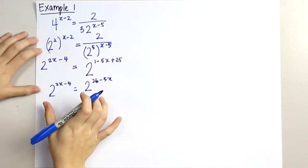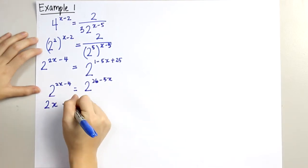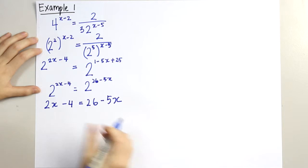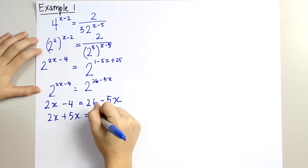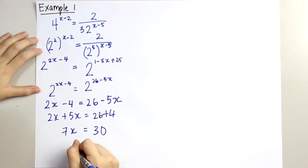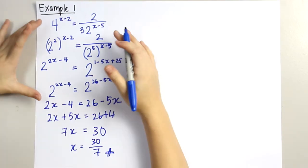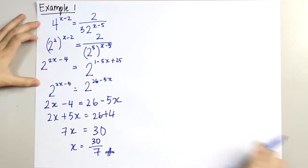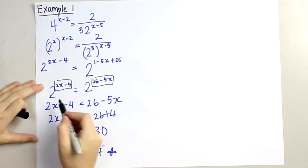Now both of them have the same base, so we can just equate the powers. So 2x minus 4 is equal to 26 minus 5x. We'll group the similar ones together: 2x plus 5x is equal to 26 plus 4. 7x is equal to 30, so x is equal to 30 over 7. For this sort of question, we change them into the same base, then equate the powers.